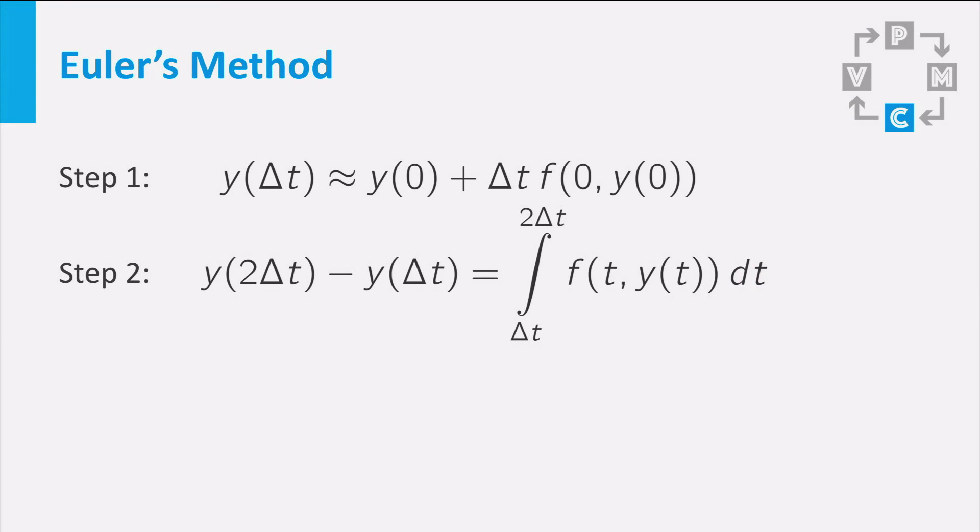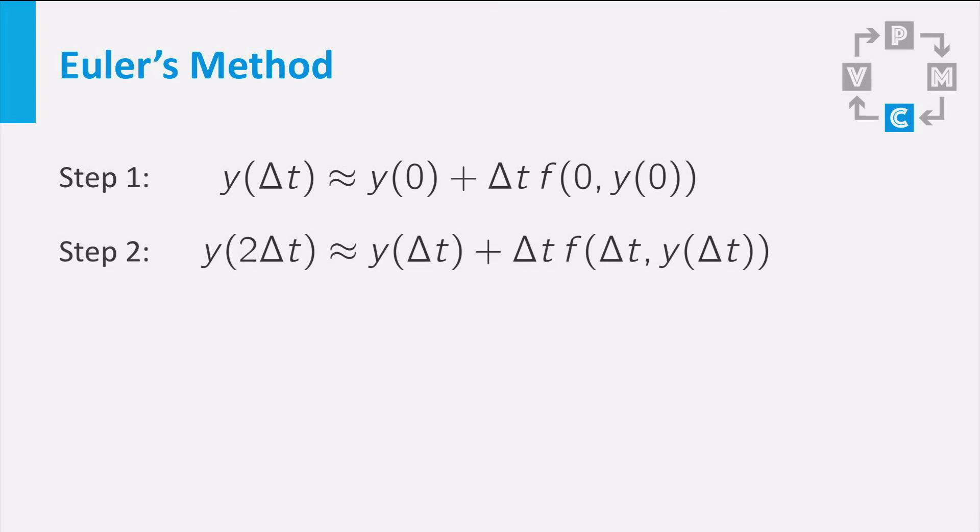Again the integral on the right can be approximated using the time equal to delta t and y equal to y at delta t. This is no problem, because you know an approximation of this value from the first step of Euler's method. Calculating the approximated integral and rearranging gives the second step of Euler's method.